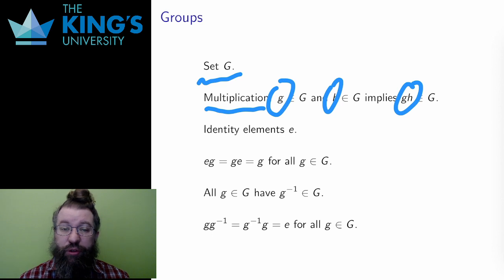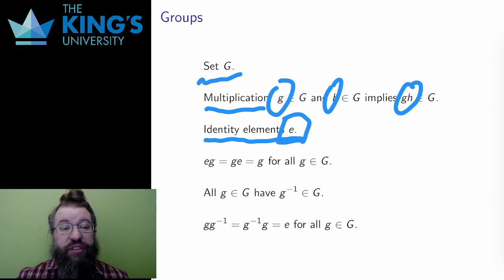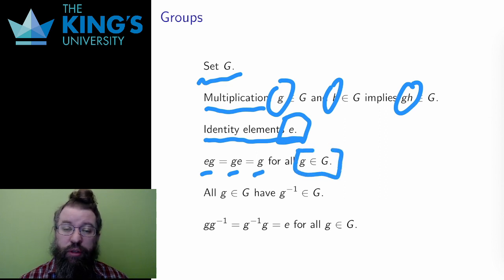One of these things in the group is the identity element, usually written e. It has the property that it doesn't do anything under the multiplication. For any other g in the group, the multiplication eg or ge (they might be different, since commutativity is not assumed) is just g. This is like multiplying by one for numbers. Nothing happens.